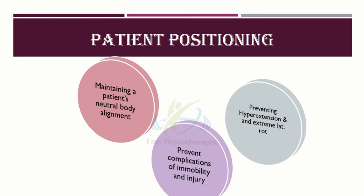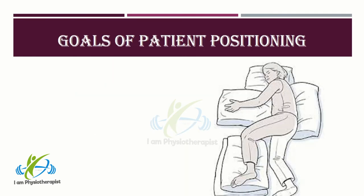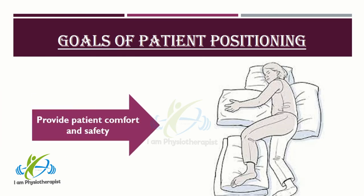Patient positioning involves properly maintaining a patient's neutral body alignment by preventing hyperextension and extreme lateral rotation to prevent complications of immobility and injury. Goals of patient positioning: it should provide comfort and safety to the patient. Proper positioning promotes comfort by preventing nerve damage and by preventing unnecessary extension or rotation of the body, and to support the patient's airway and maintain the circulation.